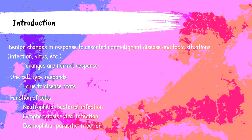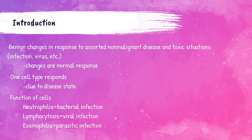This lecture video is on non-malignant granulocyte and monocyte disorders. These are benign changes of the granulocyte white blood cells — neutrophils, eosinophils, and basophils — and of monocytes in response to a non-malignant disease, like a virus or infection. When I say non-malignant, I mean non-cancerous, so benign. These are normal responses to the issue.